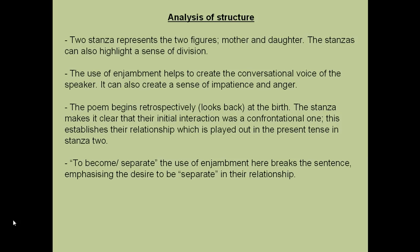The poem also begins retrospectively, looking at the birth. The first stanza makes it clear that their initial interaction was a confrontational one, so the fact that it starts confrontationally establishes their relationship to be indeed that way, which we then see played out in the present tense in stanza two. To focus on one particular example of enjambment: the line break representing separation emphasises their desire to separate in their relationship, or their wish to become separate.